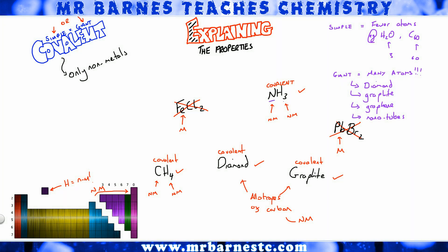Going back to the examples: NH3 has four atoms, therefore it's simple covalent. CH4 has five atoms, so it's simple covalent. Diamond is giant covalent — one of the examples we've just been through. And the same with graphite — giant covalent.